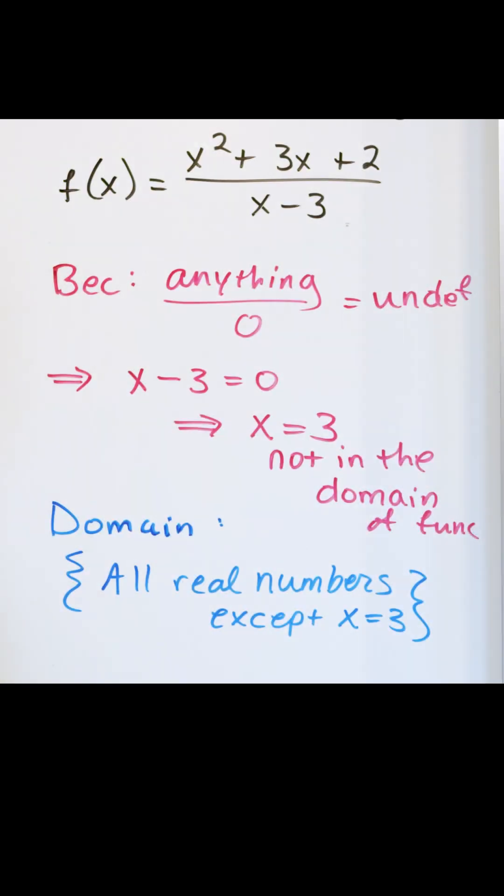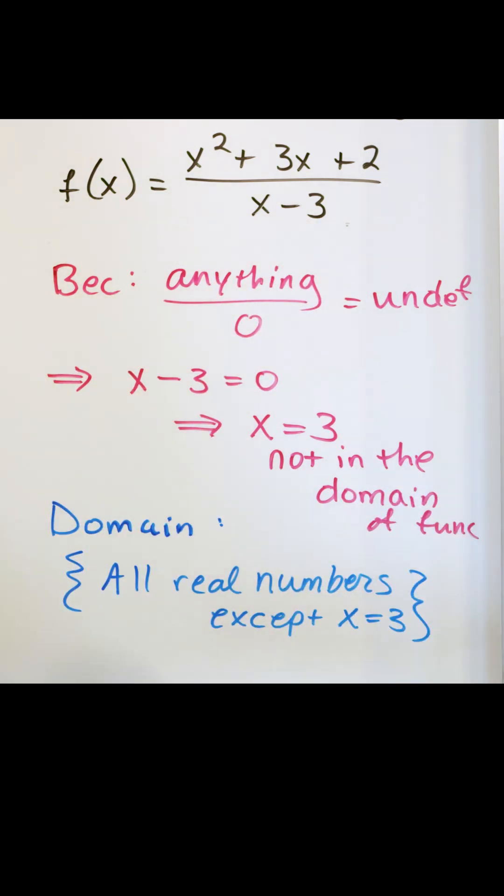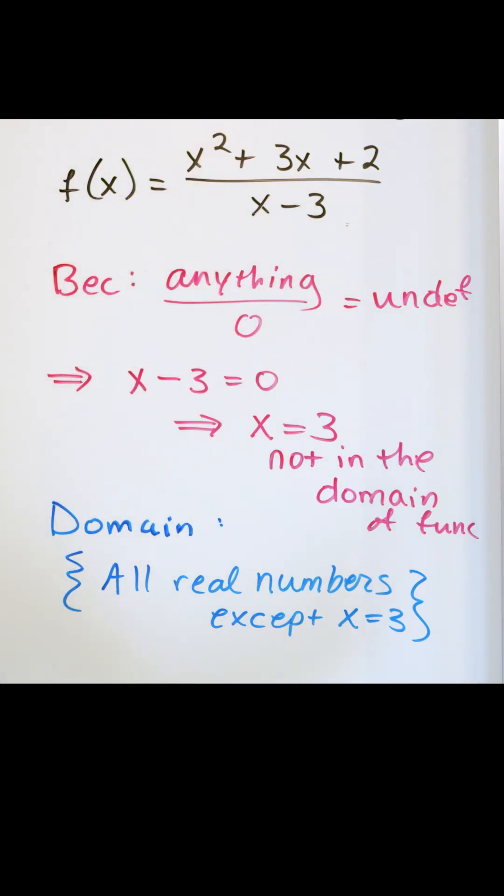I can put any number I want into this guy, negative 2,000, negative 5,900, 0.55, positive 3,024, decimal 55672. I can put any number I want in, but I can't put three in because if I put exactly three in, the whole thing becomes impossible to calculate.